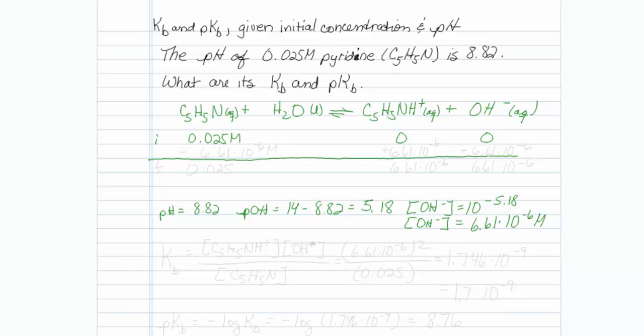Let me put that in my table under the final row: 6.61 times 10 to the minus 6 molar. And that means this has to be plus 6.61 times 10 to the minus 6 molar. Because of stoichiometry, this also has to be plus 6.61 times 10 to the minus 6 molar. And this has to be minus 6.61 times 10 to the minus 6 molar.